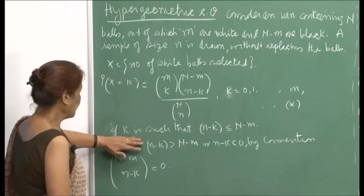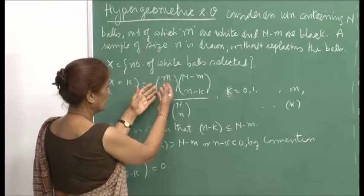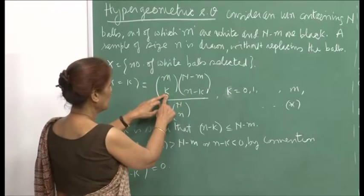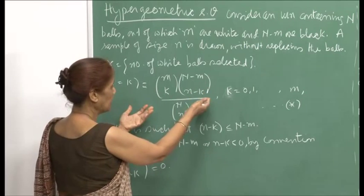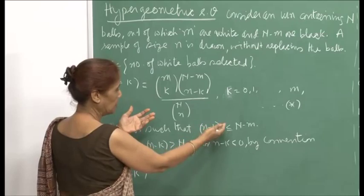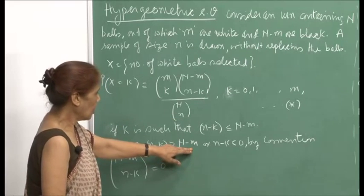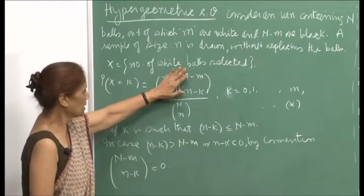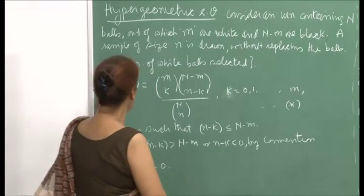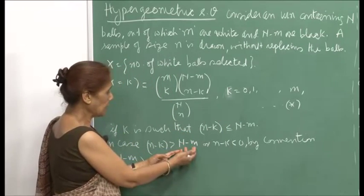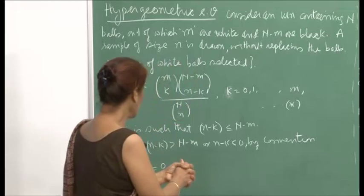Here, this is meaningful when n minus k is less than or equal to N minus m. By convention, if n minus k turns out to be greater than N minus m, or n minus k is less than 0, then N minus m choose n minus k is 0. Therefore, if k is such that those conditions hold, the probabilities will be 0 and there will be no mass attached to those values of k.